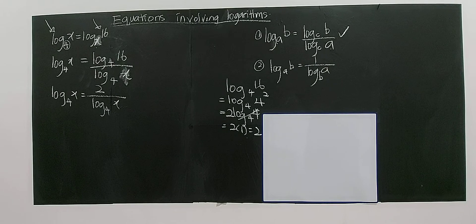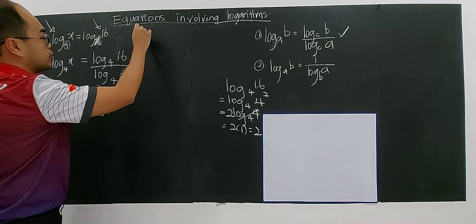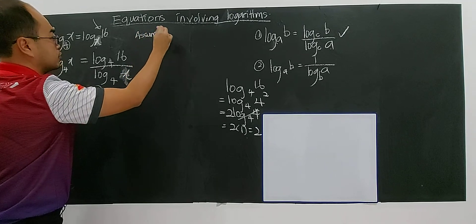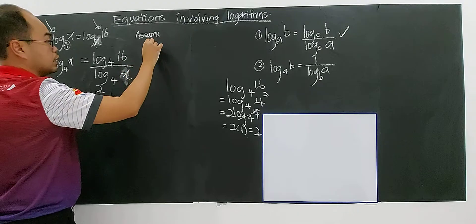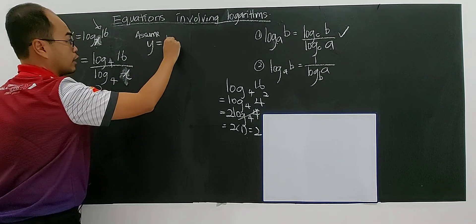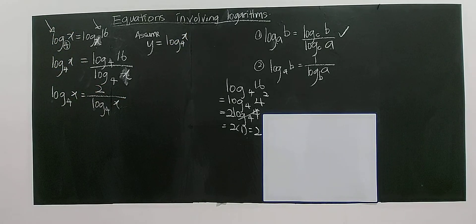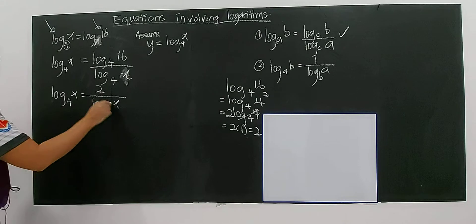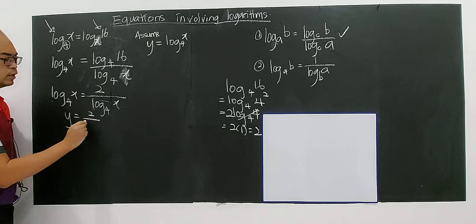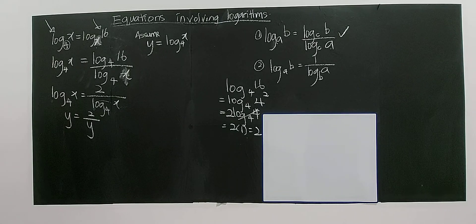Now you can see these two are identical. Usually we will ask them to assume, because they have the same unknown. Assume Y or U is equal to log X to the base 4. So you have to replace this with Y equals to 2 over Y.